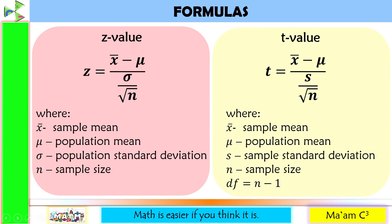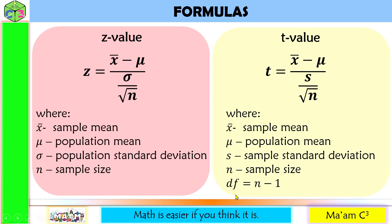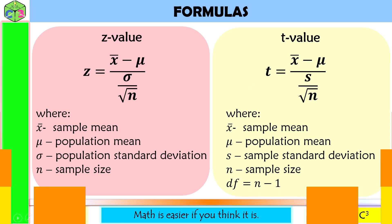In this lesson, we are going to use two formulas — one for computing the Z-value and the other for computing the T-value. Notice the similarities: X-bar is the sample mean, mu is the population mean, and n is the sample size. The only difference is the standard deviation. For Z-test, you need the population standard deviation denoted by sigma. For T-test, you need the sample standard deviation denoted by S. For a T-distribution, we also have degrees of freedom, which is equal to n minus 1.